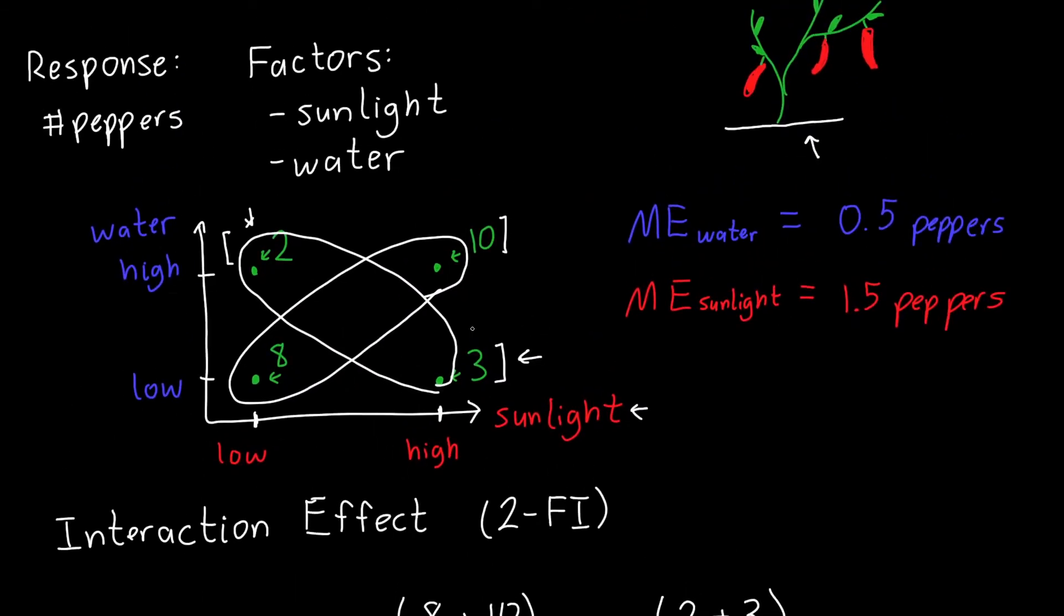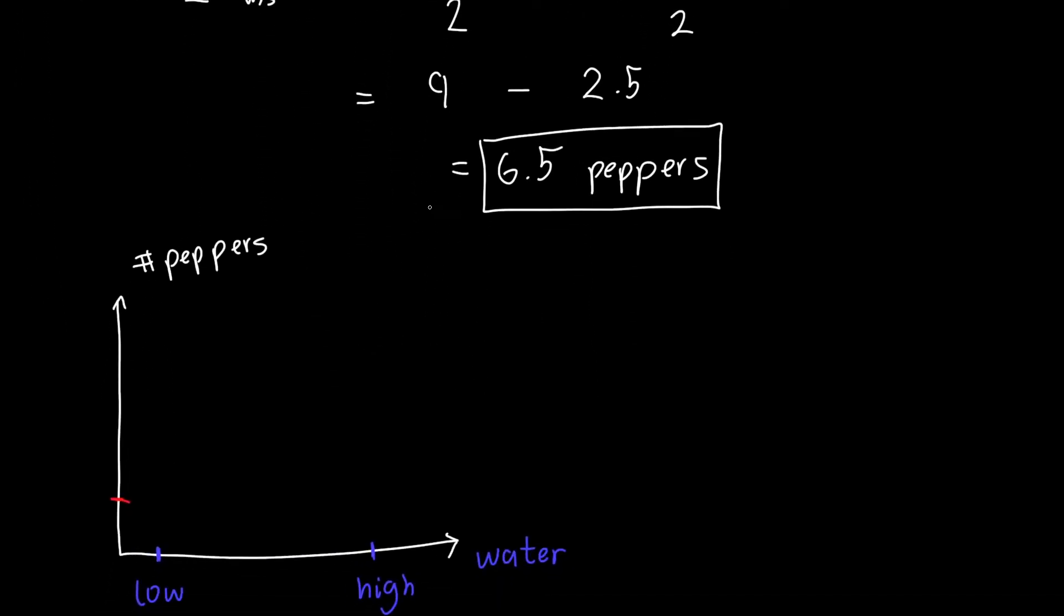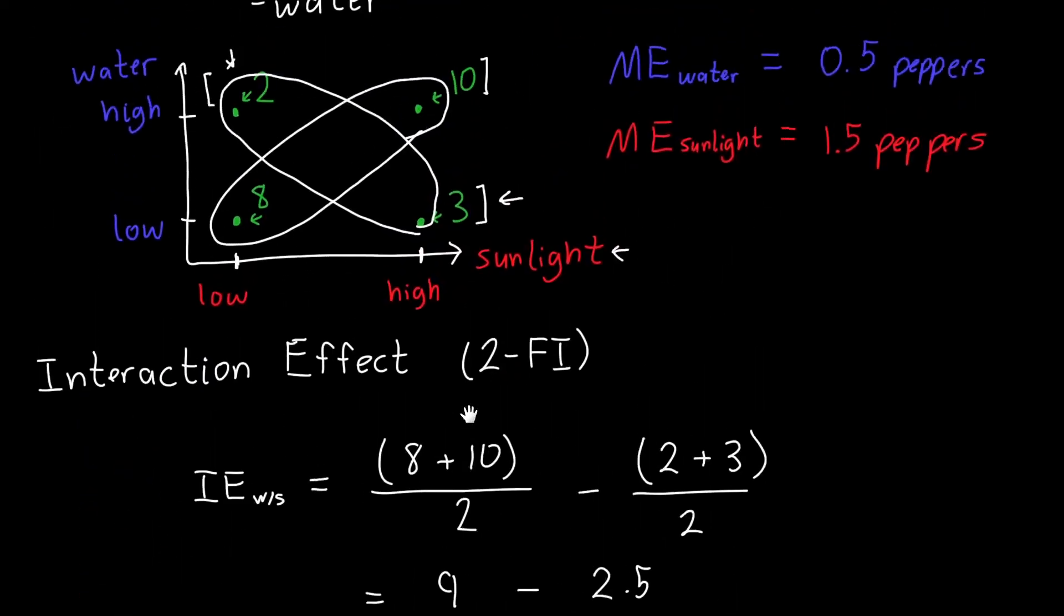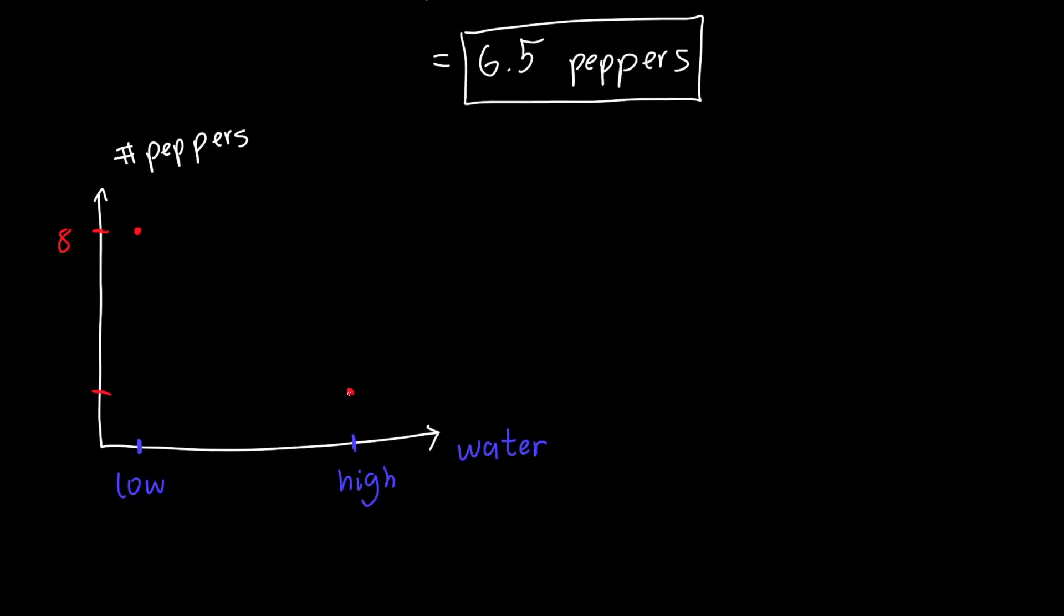One way of seeing these interactions is with what's called an interaction plot. So let's say I plot the number of peppers I manage to grow on the y-axis. And then let's say I plot the amount of water that I give on the x-axis. And so let's say we had a low amount of water and a high amount of water. And let's plot the values of this experiment for the case first of a low amount of sunlight. So for a low amount of sunlight and a low amount of water, we managed to grow eight peppers. So up here, let's say, we managed to grow eight peppers. And for a high amount of water and a low amount of sunlight, we managed to grow two peppers. So eight and two. And so this curve is for a low amount of sunlight.